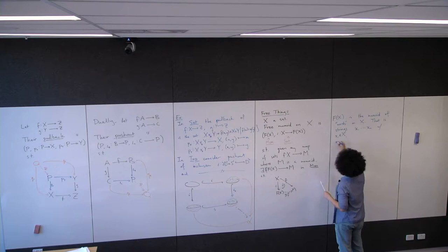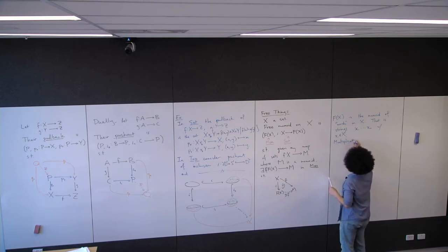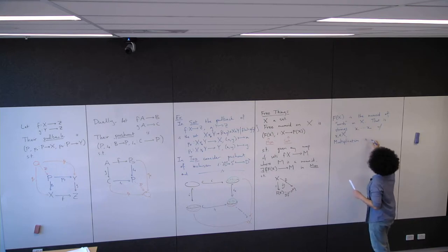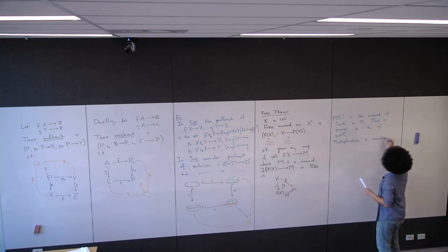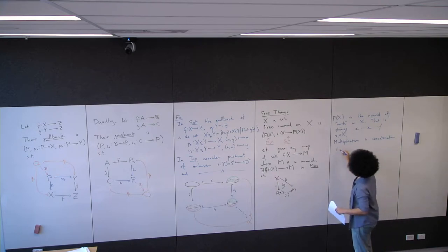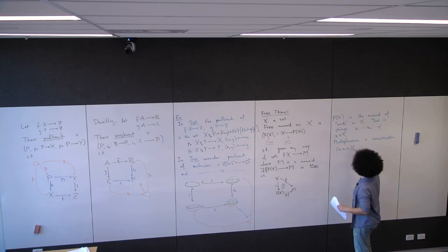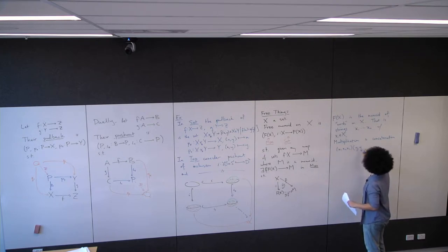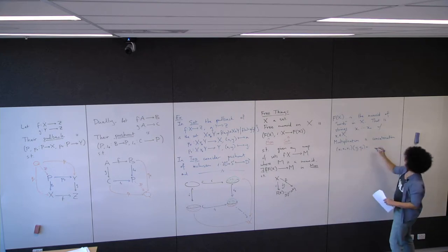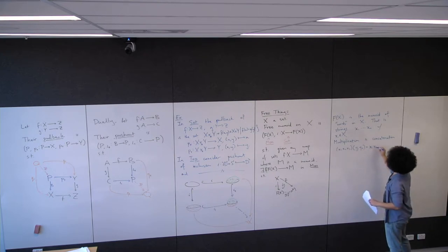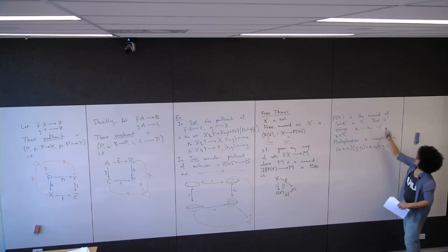It's a monoid, so it needs a multiplication. The multiplication is concatenation: if I have x_1, x_2, x_3 as one word and y_1, y_2 as another word, multiplying them gives x_1, x_2, x_3, y_1, y_2, which is another string.